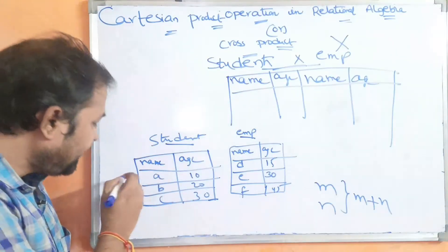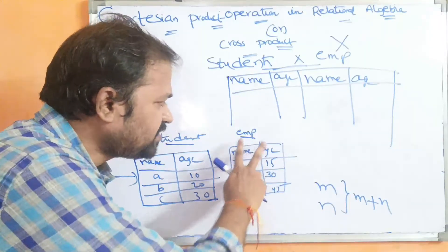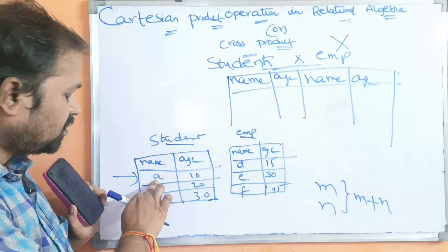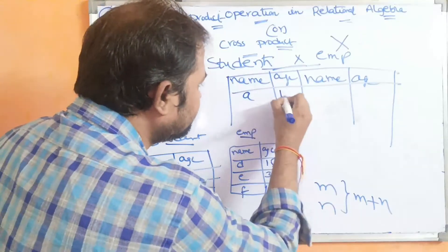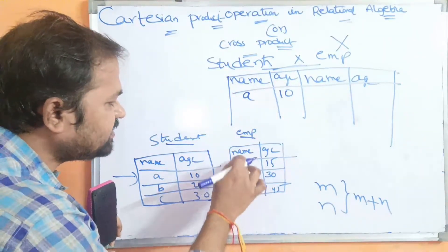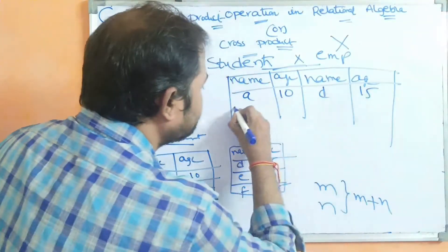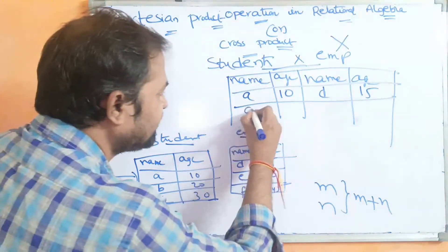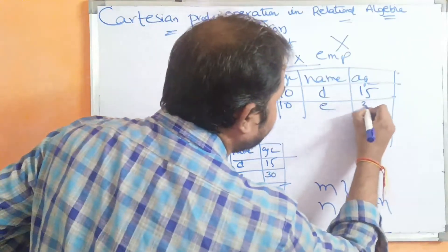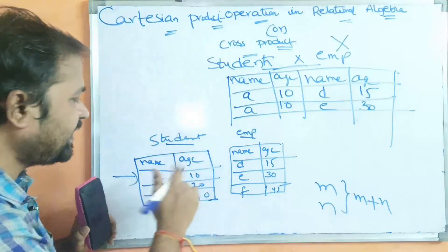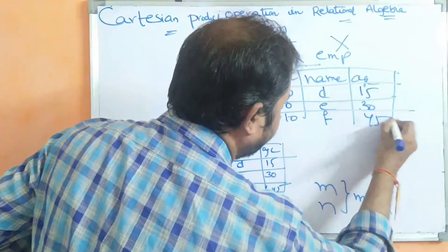In a Cartesian product, each tuple of the first relation must be combined with all the tuples of the second relation. A tuple can also be called a row. So the first row of the first relation is A10, and it is combined with all rows of the second relation. The first row of the second relation is D15, giving the first combined row. The second combination is A10 with E30.